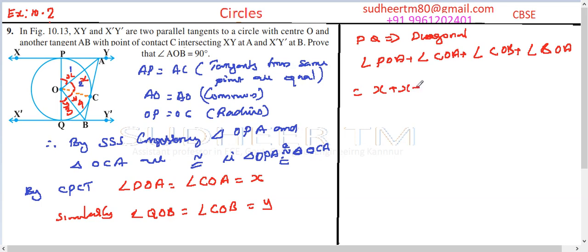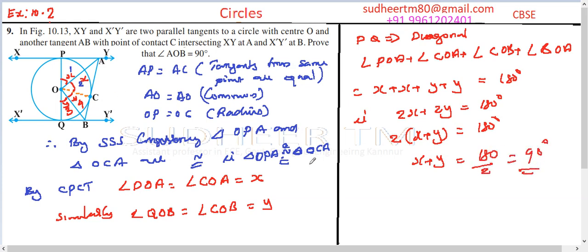This is because of the straight angle property. So 2X plus 2Y equals 180 degrees, which means 2(X + Y) equals 180 degrees. Therefore, X plus Y equals 180 divided by 2, which is 90 degrees.